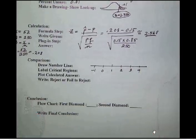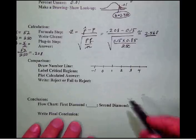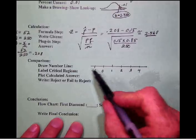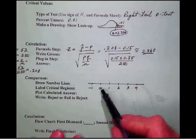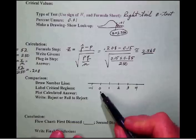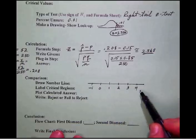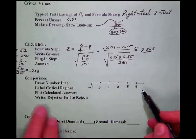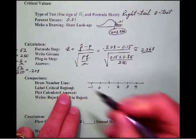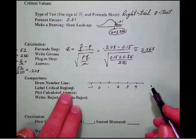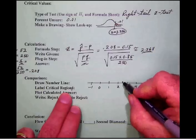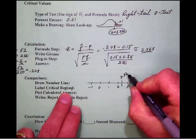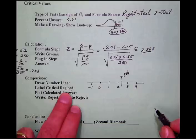Now we are in the home stretch. We have the comparison section, the most critical section of the entire hypothesis test. First of all, let's follow our steps. We're going to draw the number line. Notice that since we're dealing with a right tail test, most of the action is going to occur over here on the right side. I've got a negative one here and then all the rest of the numbers after zero are positive. We're going to label the critical regions.